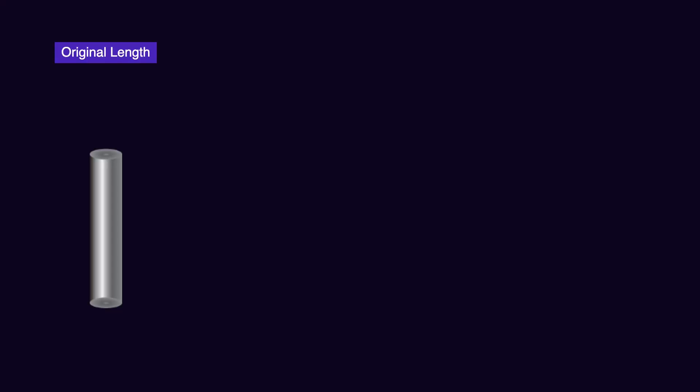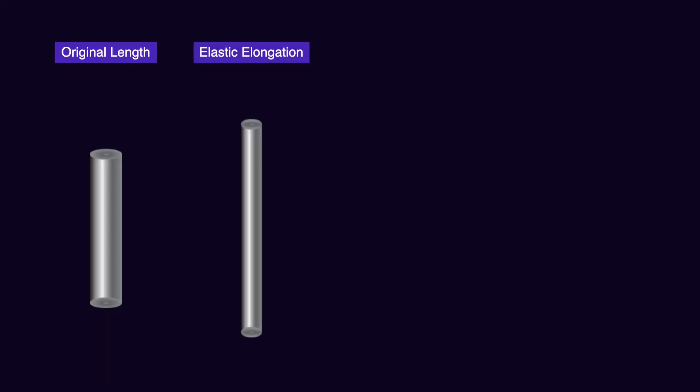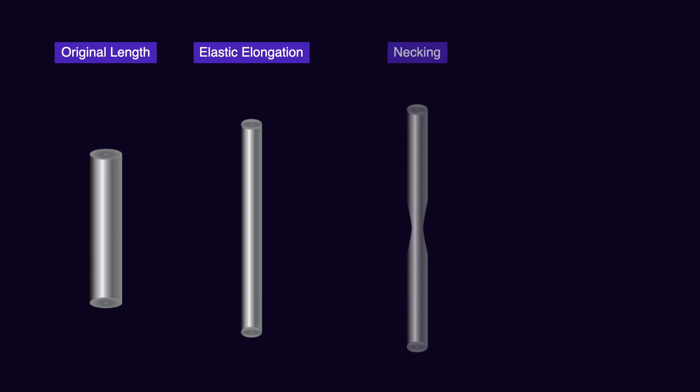Assume we are applying a tensile force along the long axis of a material such as a wire. After application of the force, when you reach the ultimate strength, the material starts to become thinner in the center. Now the material does not have the same structure as before.